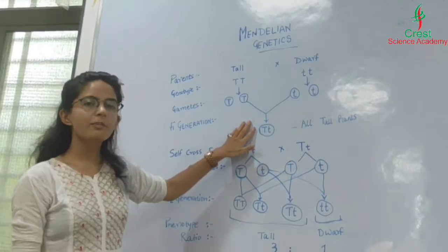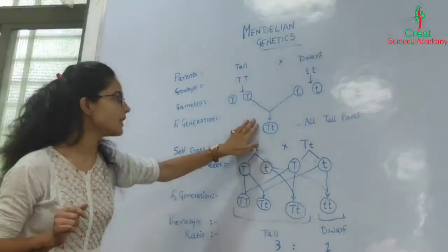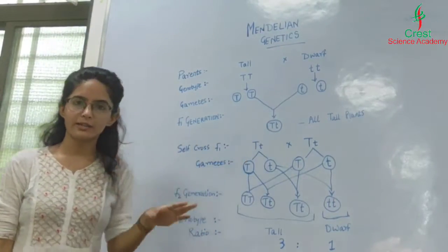However, the genotype of these tall plants was capital T and small t. In F1 generation the allele small t is not expressed.